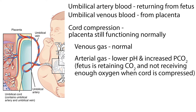In the case of cord compression, the placenta is still functioning normally, so the venous gas would still be normal. However, the arterial gas would reflect a lower pH and increased pCO2, because the fetus would be retaining CO2 and not receiving enough oxygen when the cord is compressed.